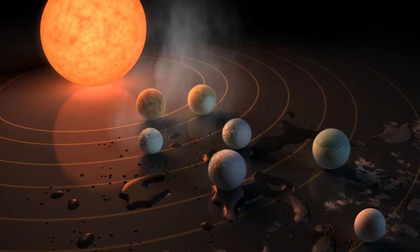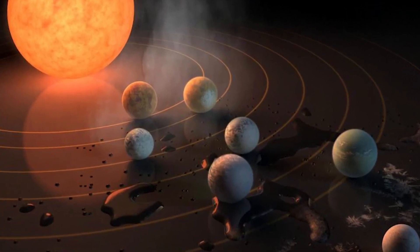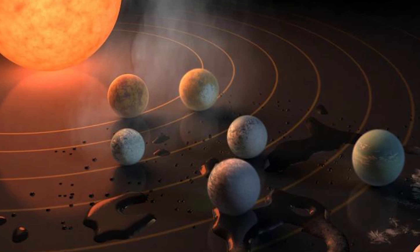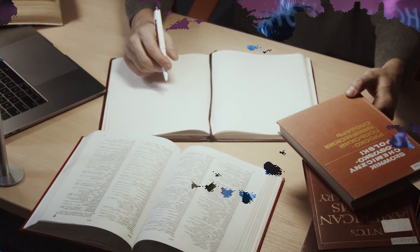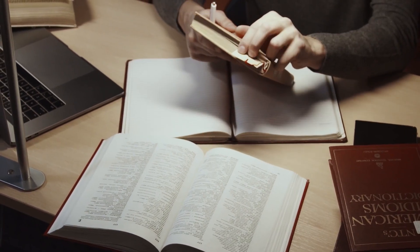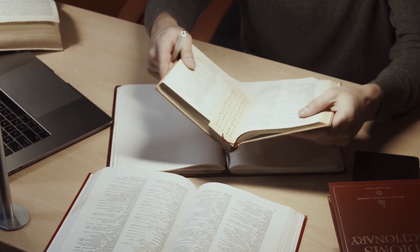This is a groundbreaking discovery, as we have not found a new planet in our solar system in over 80 years. Scientists have been searching and studying the Kuiper Belt for any signs of a new planet, and have now finally found it.